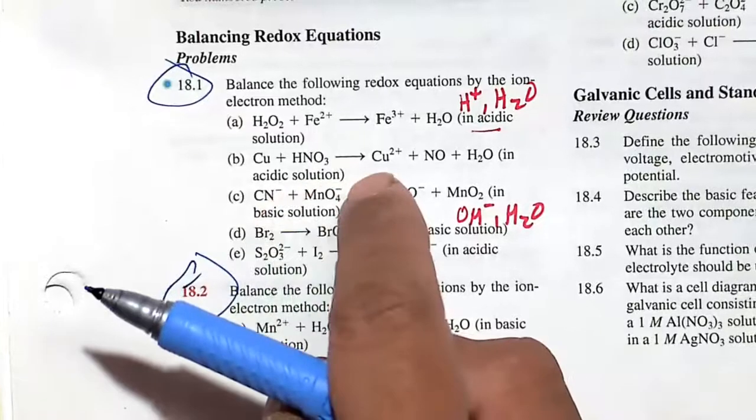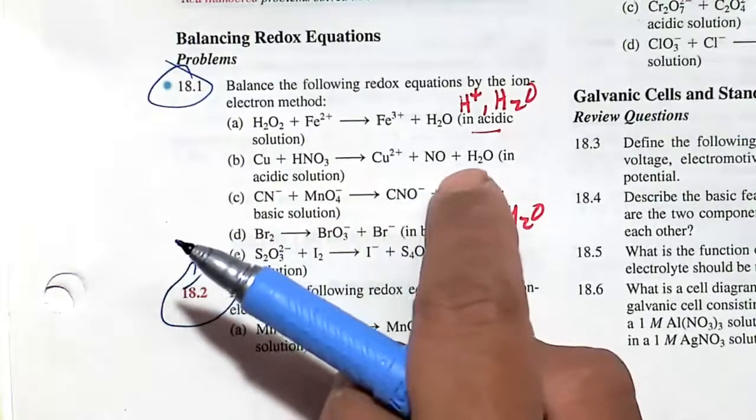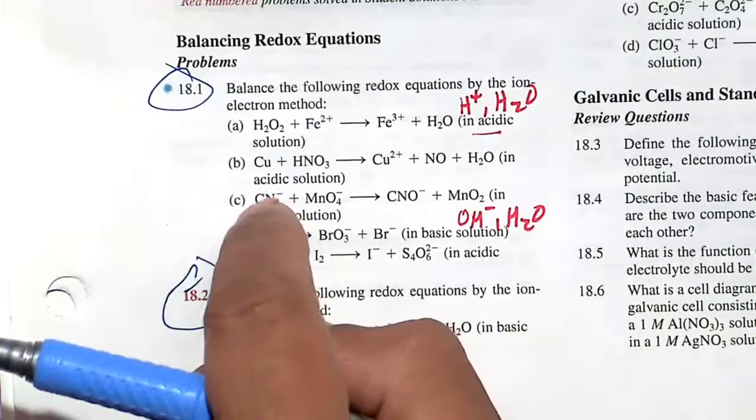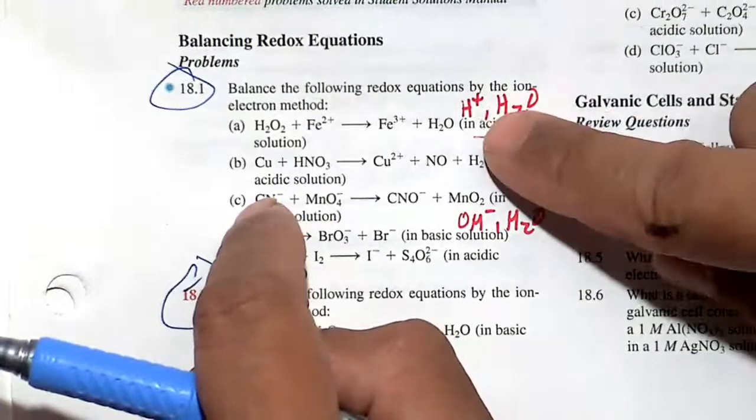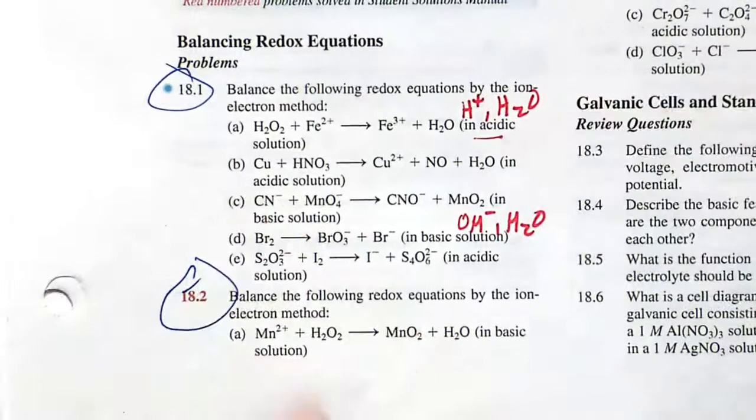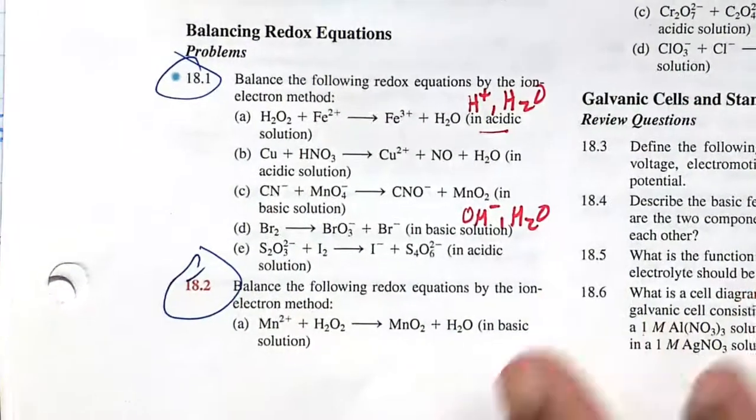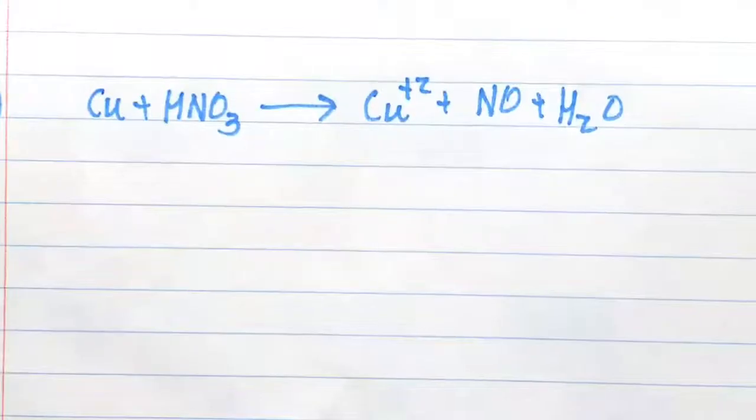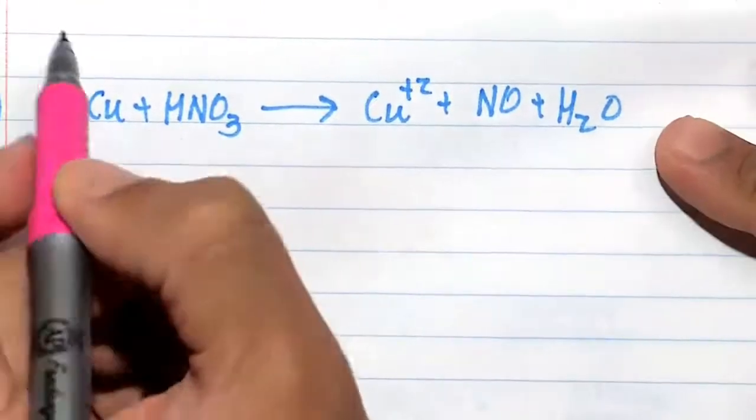Copper plus nitric acid goes to copper²⁺ plus NO plus water. This is also done in acidic solution, so use the H⁺ and H₂O to help balance each individual half reaction. Remember, this is occurring in water and in acid solution.